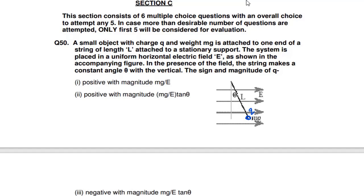You can see electric field lines there with the help of grey lines. In the presence of the field, the string makes a constant angle theta. You can see this is angle theta. And we have to find the sign and magnitude of q.